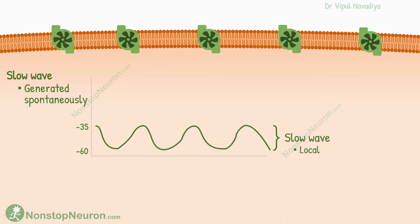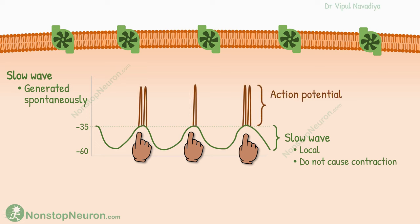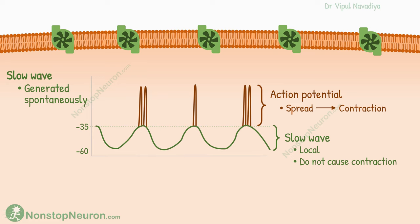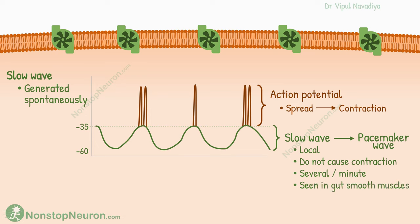Such potential changes occur locally and do not spread, and they cannot cause muscle contraction. However, during the positive phase of the potential, if the voltage reaches the threshold of about minus 35 millivolts, the action potential is generated as usual, and the action potential can spread along the membrane and cause muscle contraction. In one peak of a slow wave, one or more action potentials may appear. This repetitive sequence of action potentials causes rhythmic contraction of the muscle. So the slow waves, which are responsible for this rhythm, are also called pacemaker waves. They occur at a frequency of several cycles per minute and are seen in gut smooth muscles, where they cause rhythmic contractions.